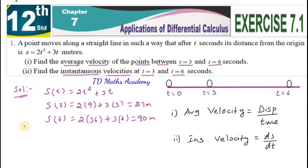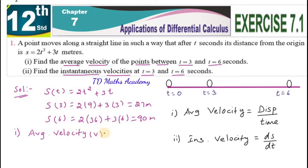Now for the first question solution: average velocity equals displacement divided by time. We have to find the displacement. Average velocity v equals displacement by time, and we need the displacement between t equal to 3 and t equal to 6.